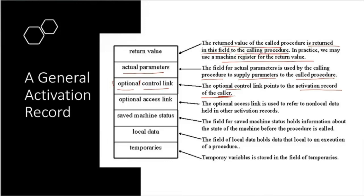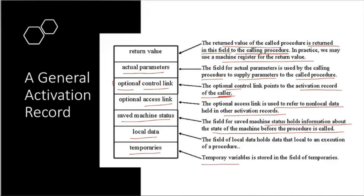When the called function terminates, it needs to return to the caller, so the control link is saved. The optional access link refers to non-local data held in other activation records. The saved machine status field holds information about the state of the machine before the procedure is called. The local data field holds data local to an execution of a procedure — basically local variables.